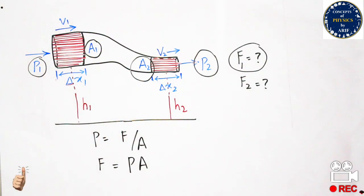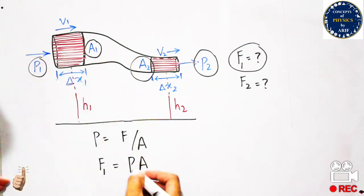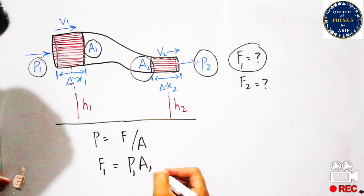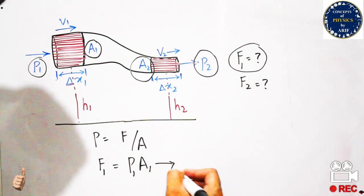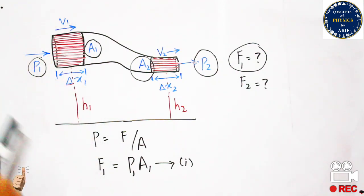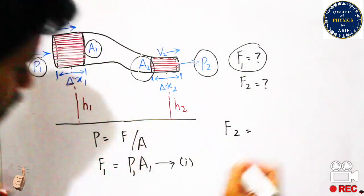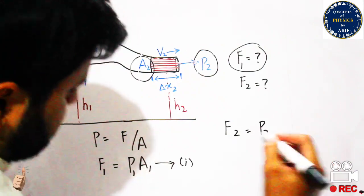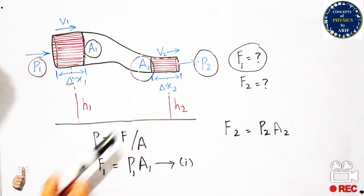For region one, f1 is equal to the product of pressure p1 and area a1. Similarly, the force in region two, f2, is equal to the product of pressure p2 and the area of region two, shown as the shaded region in red lines.